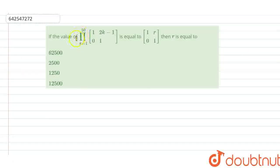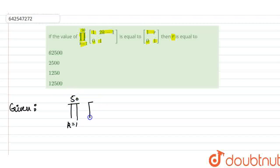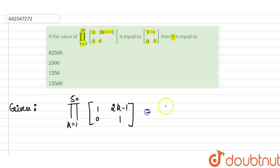Hello everyone. The question says that if the value of the product — summation k equals 1 to 50 — for the matrix [1, 0; 2k−1, 1] is equal to [1, 0; R, 1], then we have to find the value of R. So they are saying that this product is equal to this matrix.